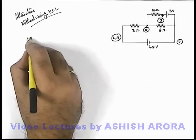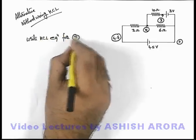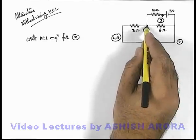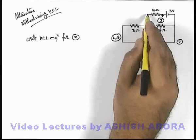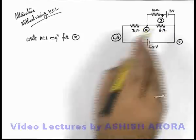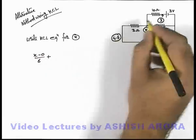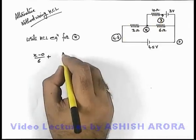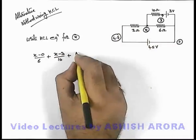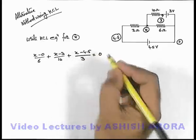Then we can directly write KCL equation for x, that is for this junction, which is the sum of all outgoing currents from a junction is equal to zero. So there are 3 terminals or 3 branches connected to this junction. We can write on the right hand side the current going will be (x minus 0) by 6, plus the current going in this 10 ohm resistance will be (x minus 3) by 10, plus the current going in this direction will be (x minus 4.5) by 3, which should be equal to zero.